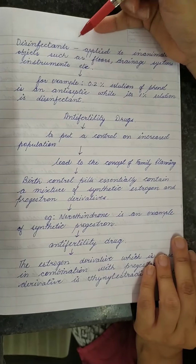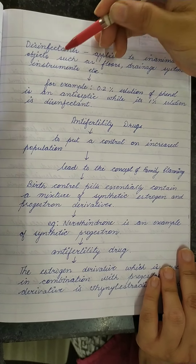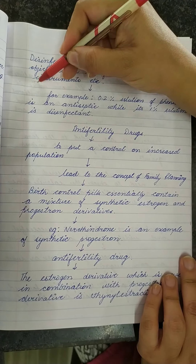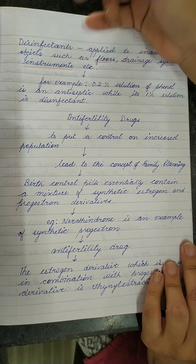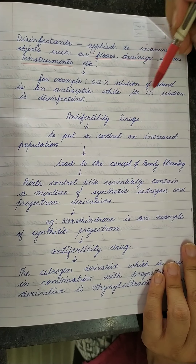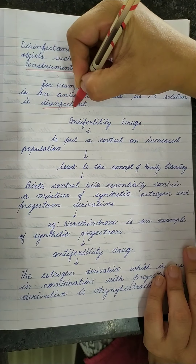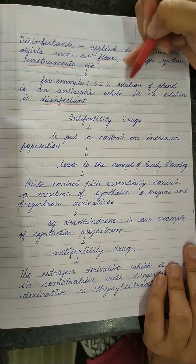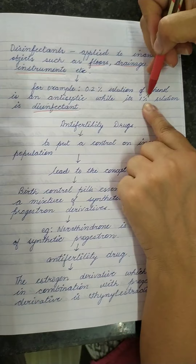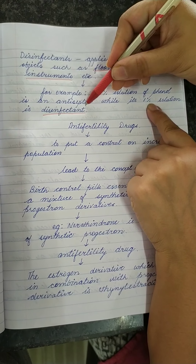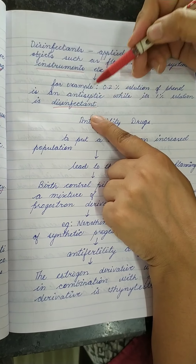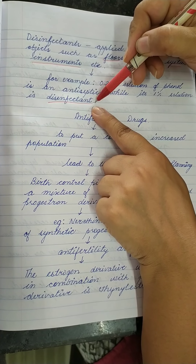Disinfectants are applied to inanimate objects such as floors, drainage systems, instruments, etc. You must have seen related advertisements. For example, a 0.2% solution of phenol is an antiseptic, while its 1% solution is a disinfectant. So at 0.2% it can be applied to living tissues, but at 1% it is used on non-living things.